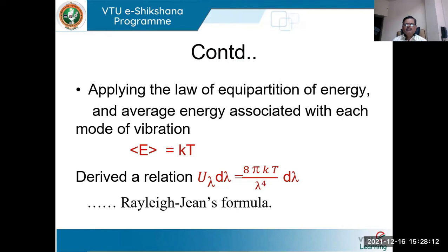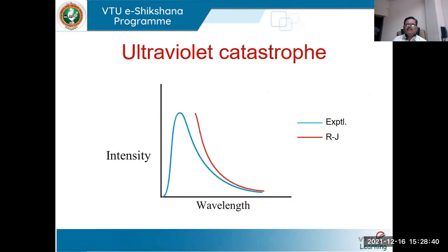The numerator of the Rayleigh-Jeans expression is a constant factor while the denominator contains λ⁴. Determining U_λ dλ for various wavelengths and plotting gives a curve we can compare with experimental results. The red colored curve shows the Rayleigh-Jeans formula and the blue colored curve shows the experimental results. For longer wavelength limits, there is close matching between experimental and calculated results, but a mismatch is present in the shorter wavelength region.